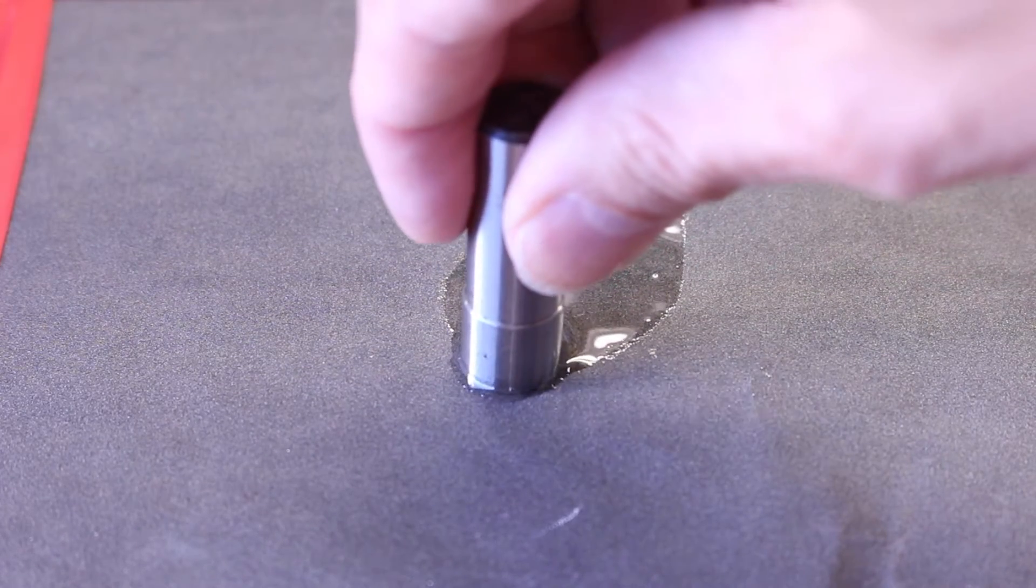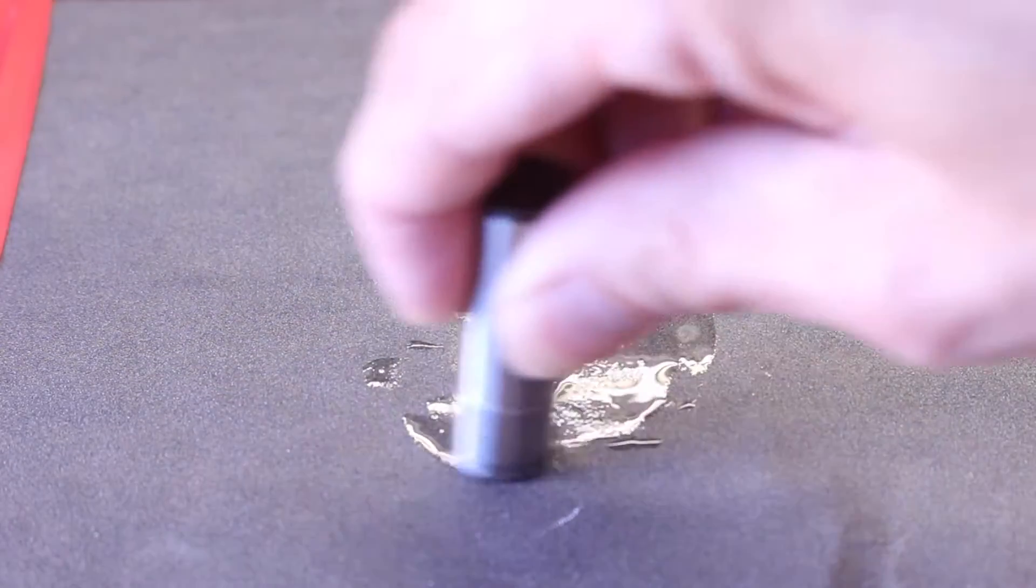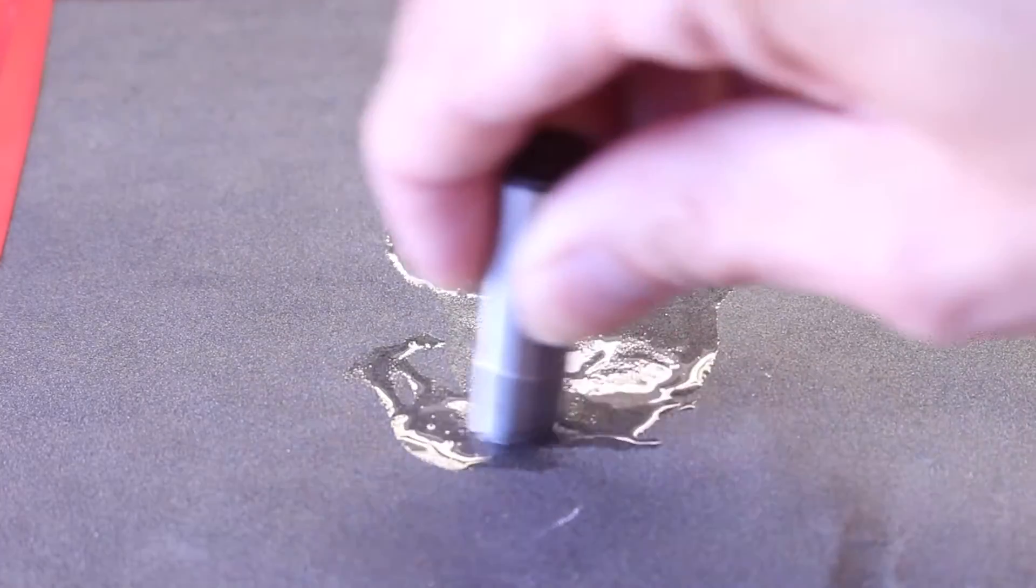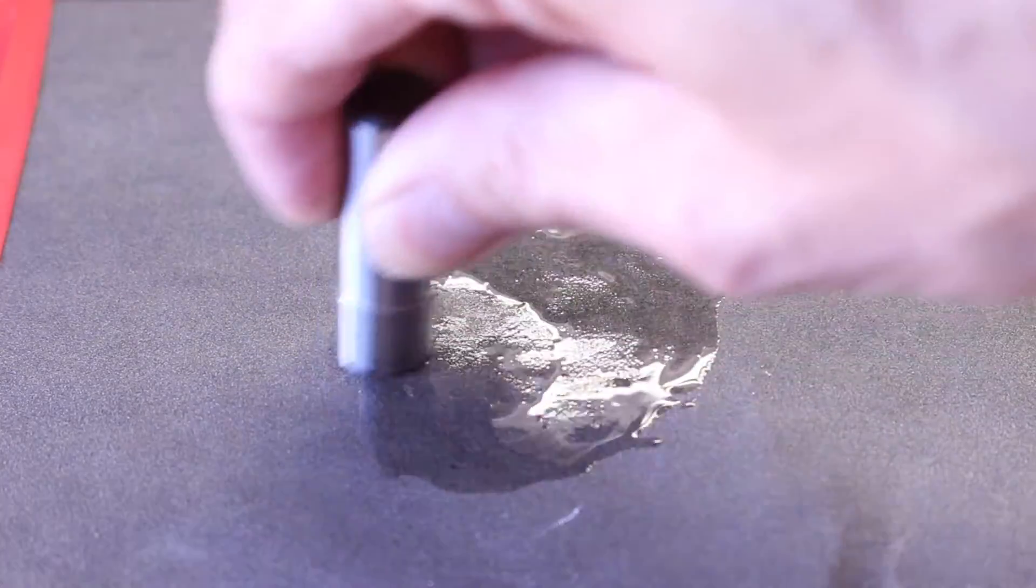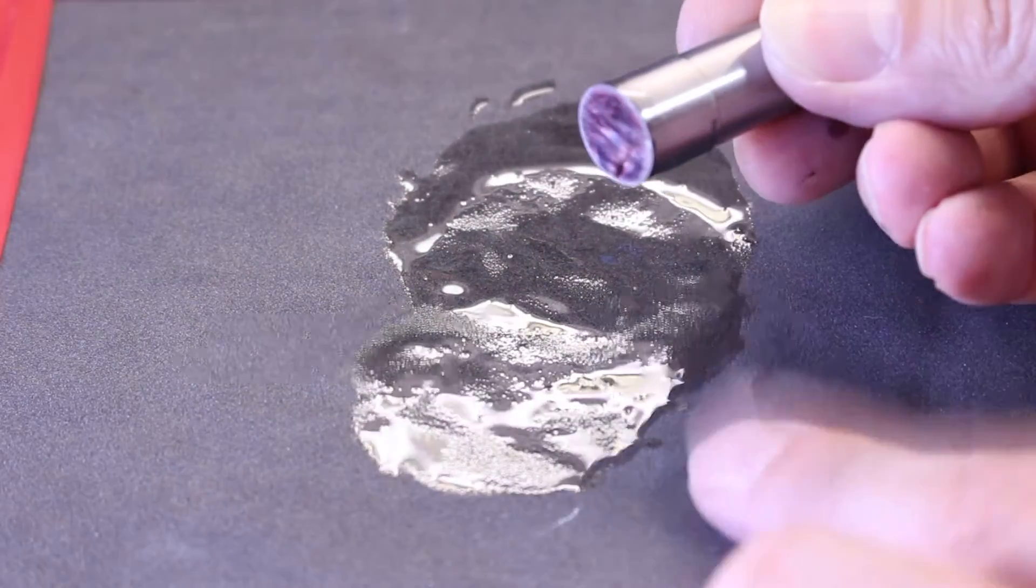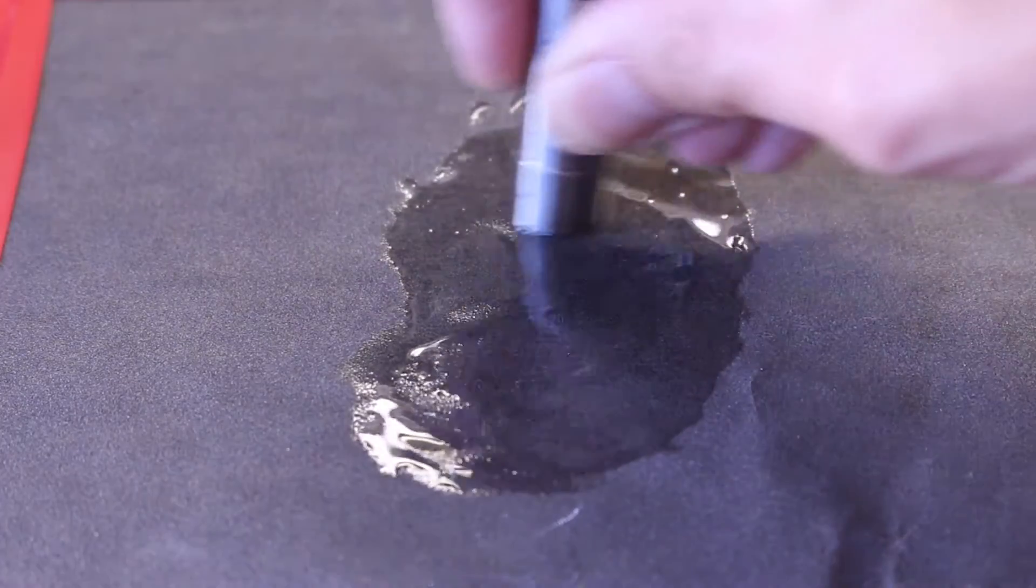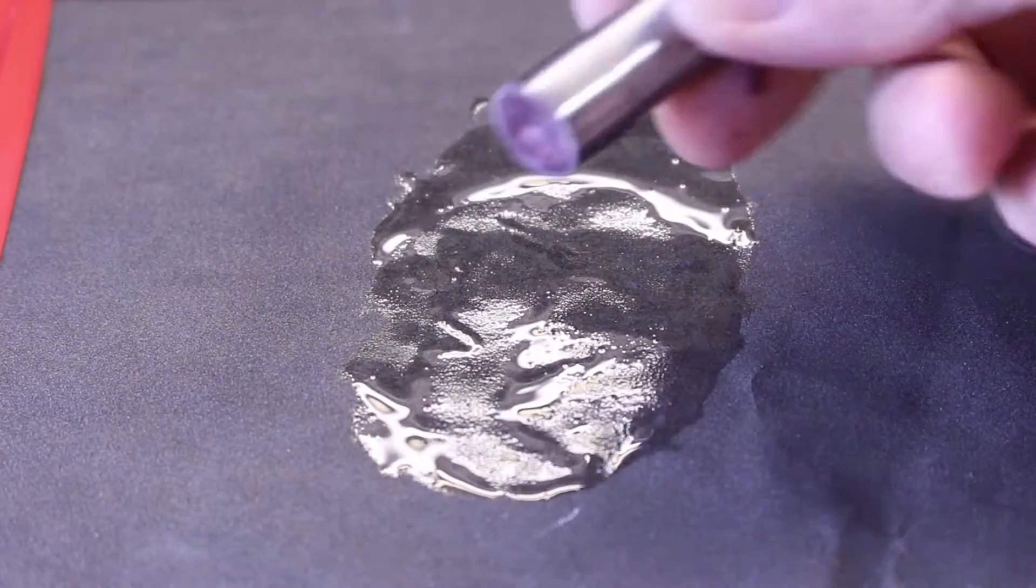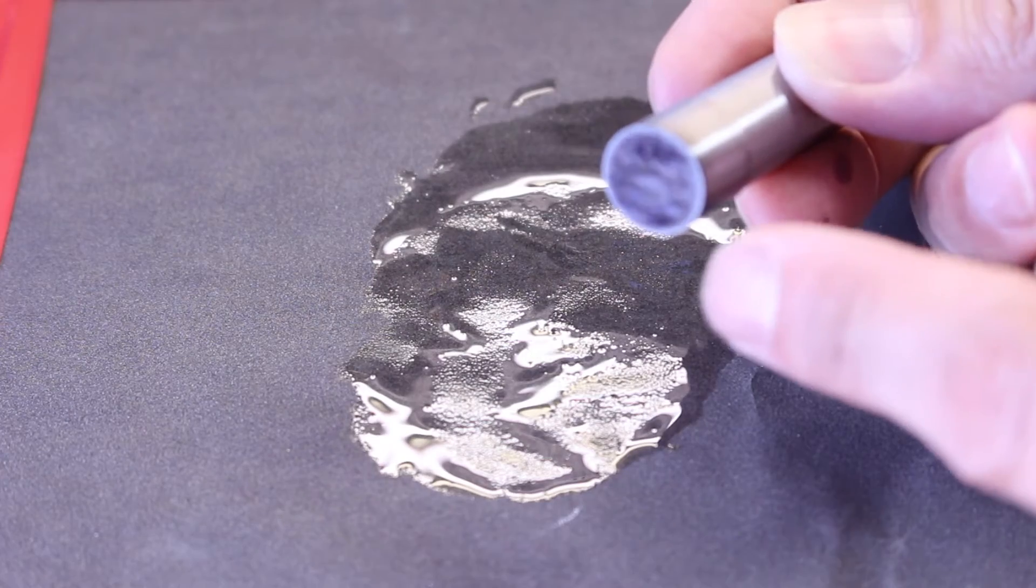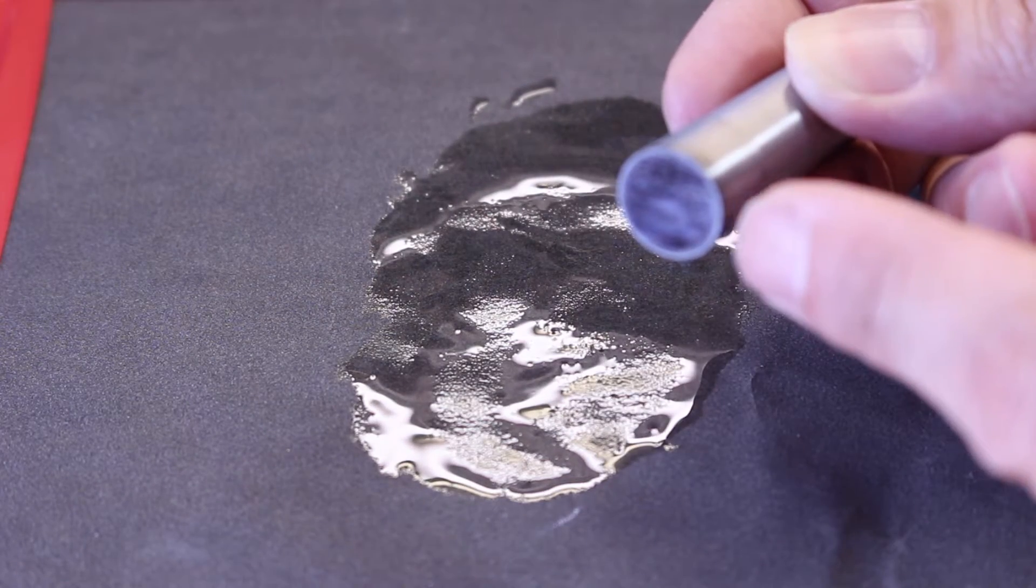You want to hold it firmly and use a figure-eight motion, just all the way around, keeping it flat, keeping it parallel, and keeping that cutting face perfectly flat to your surface. Just keep moving in a figure-eight and then look at it. You want to make sure that you've got a nice even surface and that you've removed all of that black marker.